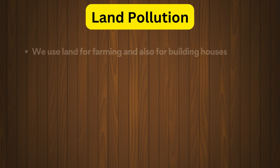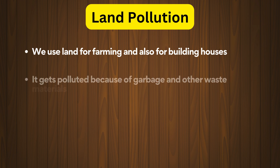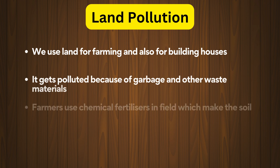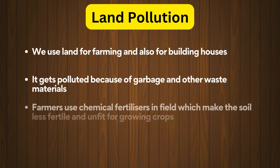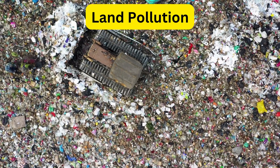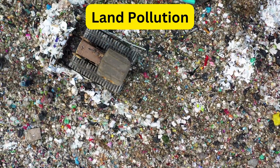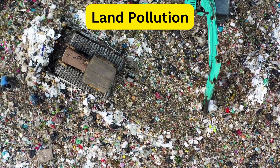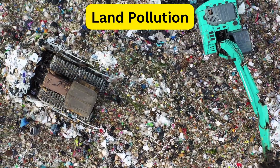Next we see about land pollution. We use land for farming and also for building houses. It gets polluted because of garbage and other waste materials. Farmers use chemical fertilizers in fields, which make the soil less fertile and unfit for growing crops. Land pollution occurs when trash, compost, and other toxins are dumped on the land, contaminating or polluting it.